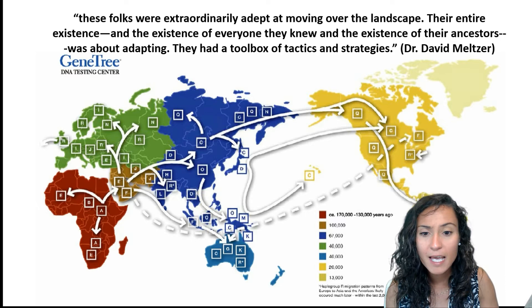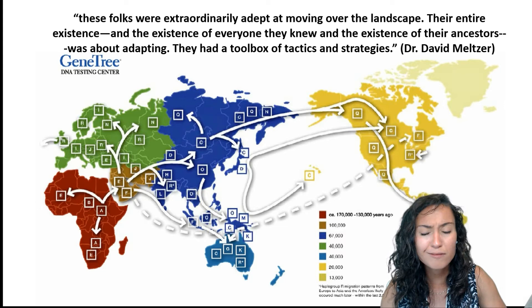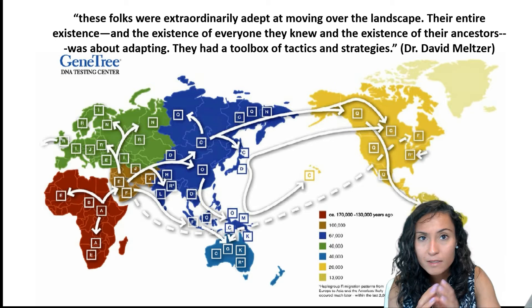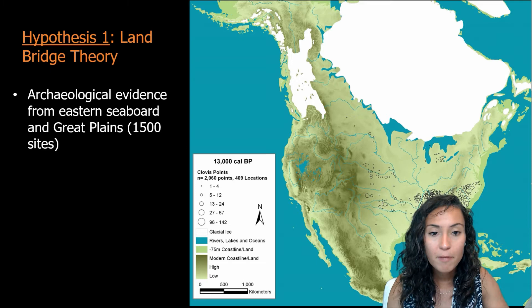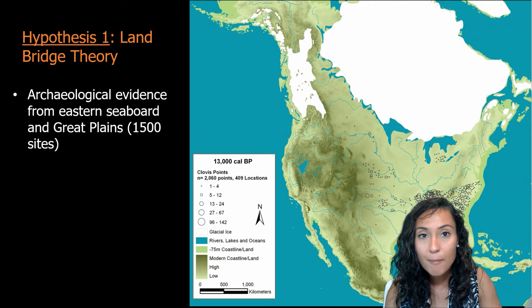Archaeologists hypothesize that these early migrants used specialized hide garments and expert knowledge of nature to traverse the Beringian landmass. Over time, migrants began moving further east and south as a warming trend around 16,000 years ago caused the northern ice sheets to melt. This would have created two passable routes to the south, opening up the migration of those people who created what's called the Clovis culture.